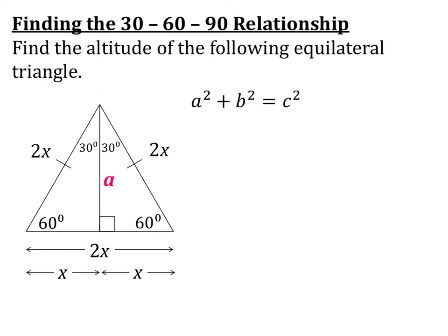So a² + b² = c². The hypotenuse c² is across from the right angle, so that's 2x. Our altitude will be a², and b² will be x². So I have a² + x² = (2x)².